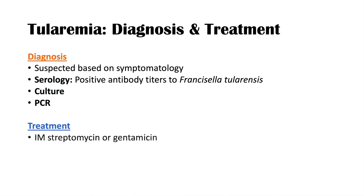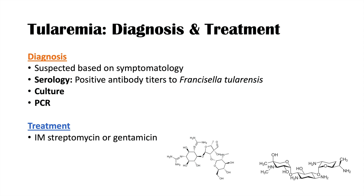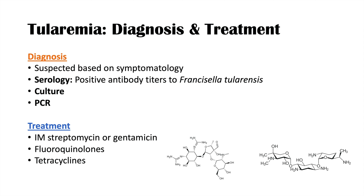Treatment involves using streptomycin or gentamicin, usually through intramuscular routes. Fluoroquinolones and tetracyclines are also known to be effective. The key challenge is actually making the diagnosis of tularemia in the first place, as it has been called a master of disguises — it can look like many different conditions and has many different clinical presentations.